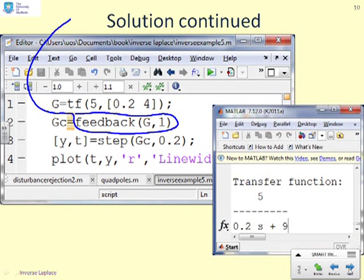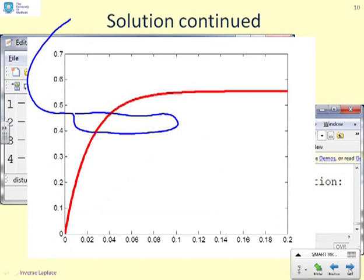And I think you'll see. Here's the answer that MATLAB's given, 5 over (0.2s+9). I haven't had to do that calculation myself. You can check it later if you don't believe me. The next two lines are the same as in the previous slides. So line 3, we calculate the step response, and I've used an end time of 0.2s, and then we plot. And here's the answer.